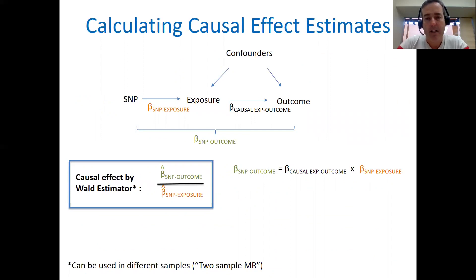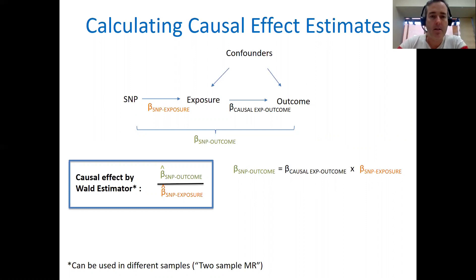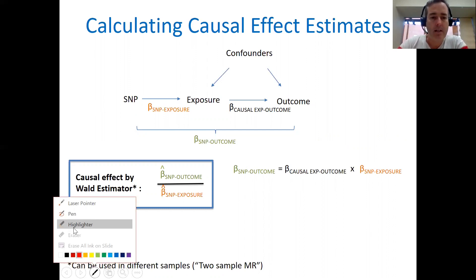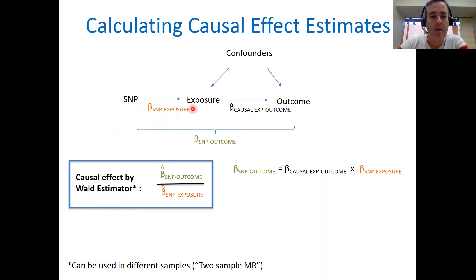The second estimator I'm going to talk about is the Wald estimator or the Wald ratio. The idea behind the Wald ratio is that we take an estimate of the SNP-exposure association — that is, the regression of the exposure on the SNP — and we take an estimate of the regression of the outcome on the SNP, which is the beta SNP-outcome coefficient.